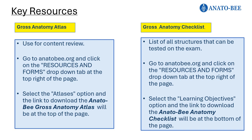The gross anatomy atlas contains information about anatomical terminology and the organs of each body system that you will need to know. The gross anatomy checklist is also important to familiarize yourself with, as it contains the entire list of items that you can be tested on during the regional competition practical exam.